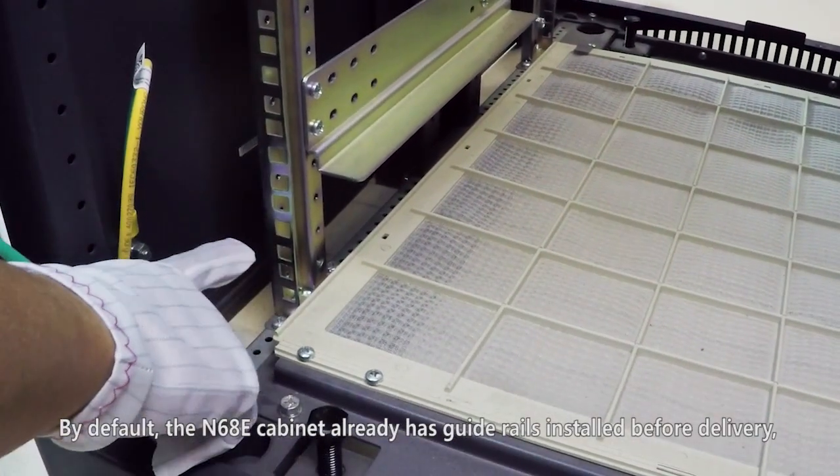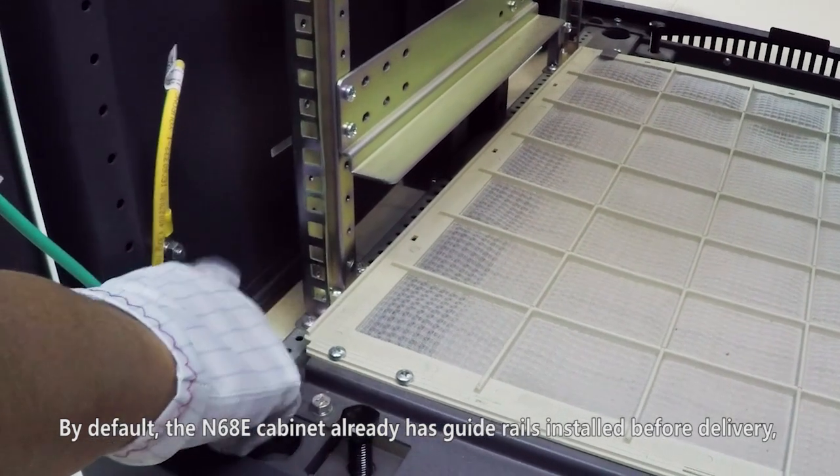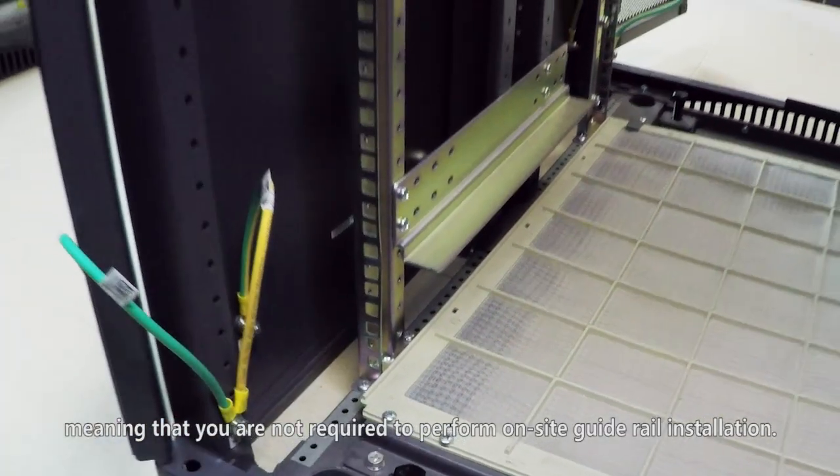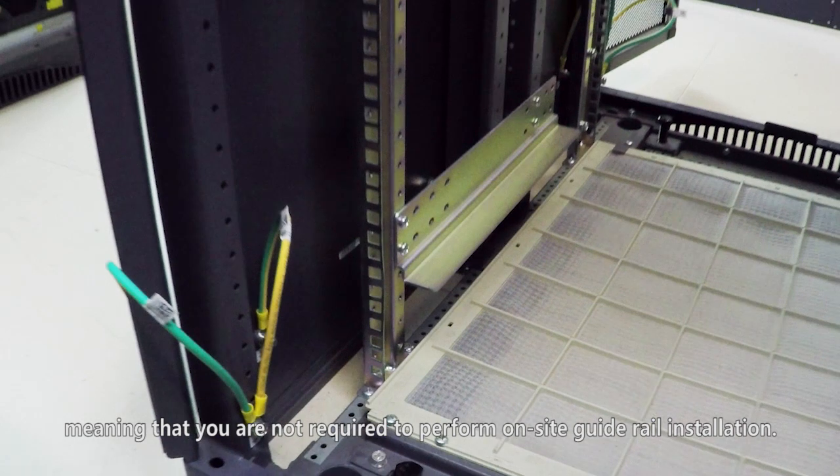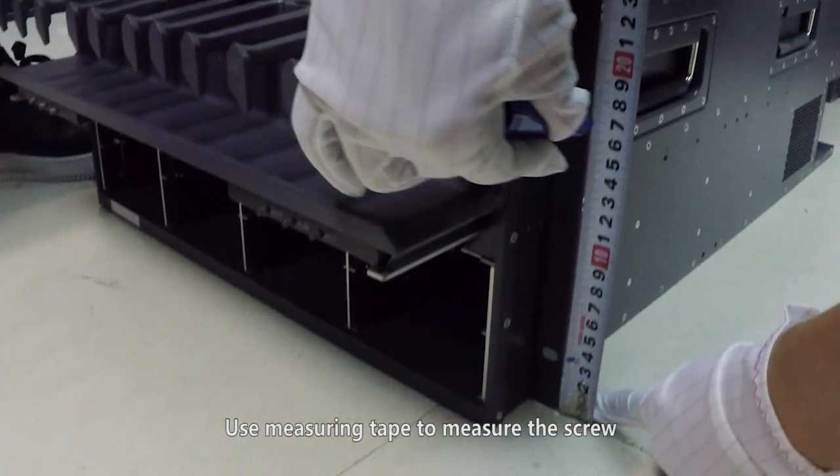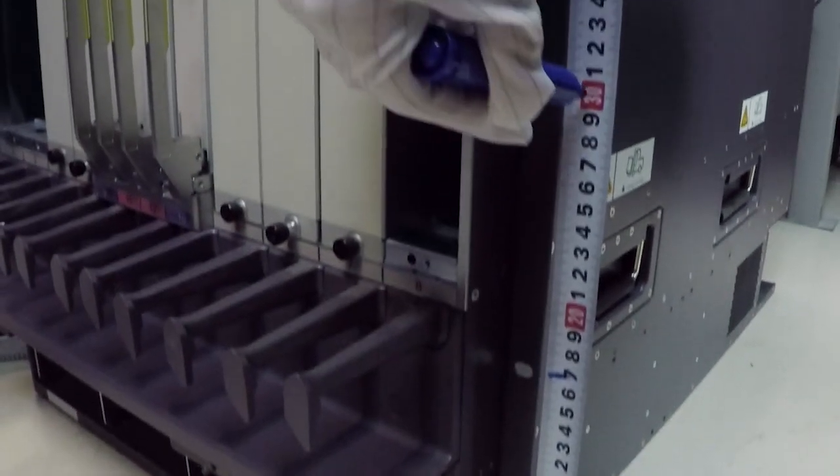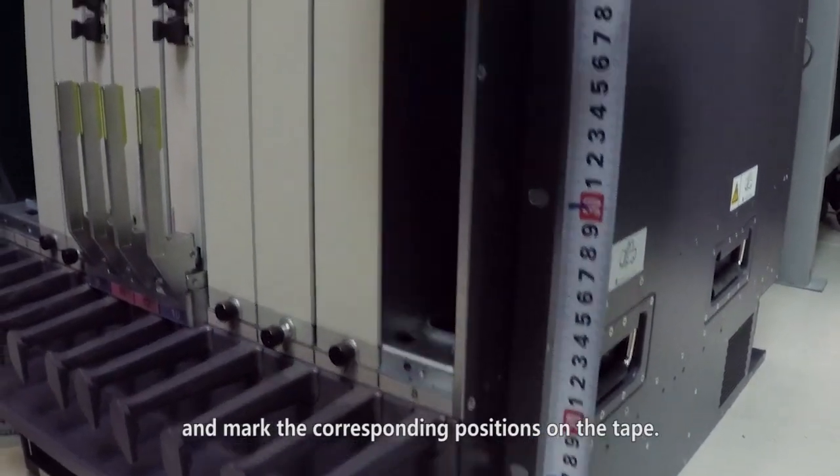By default, the N68E cabinet already has guide rails installed before delivery, meaning that you are not required to perform onsite guide rail installation. Use measuring tape to measure the screw installation holes on the panel with mounting ears and mark the corresponding positions on the tape.